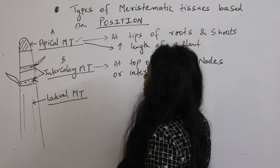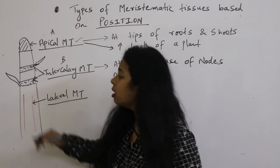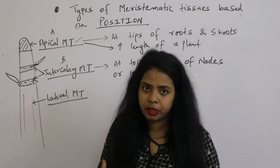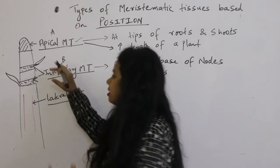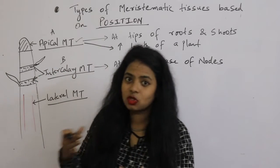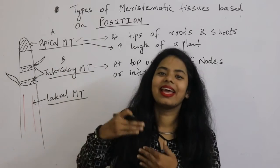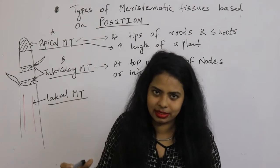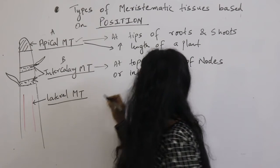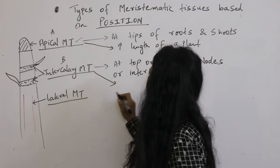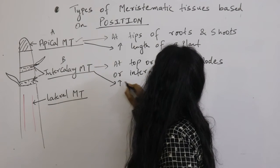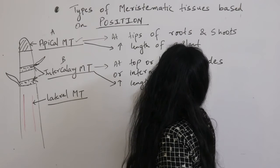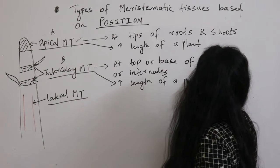What does this meristematic tissue do? The cells will divide and more cells will be added, so again the length of the plant will be increased. It has the same function as apical meristematic tissue — it increases the length of a plant.